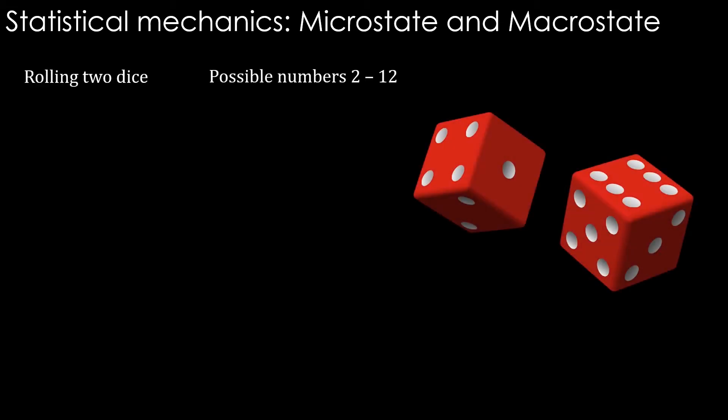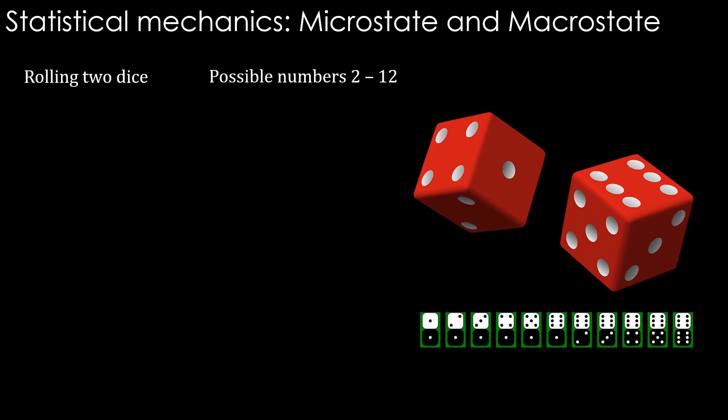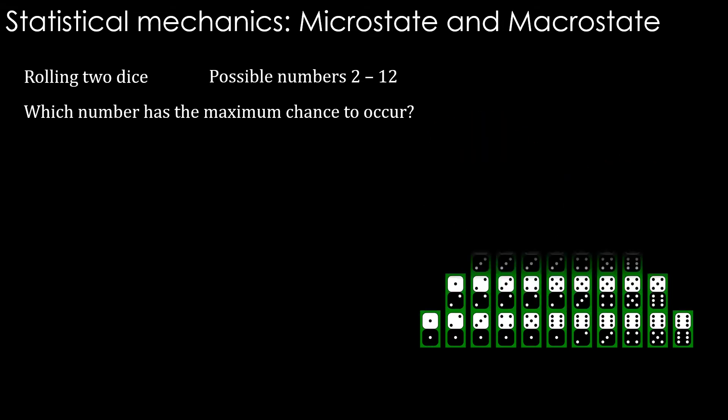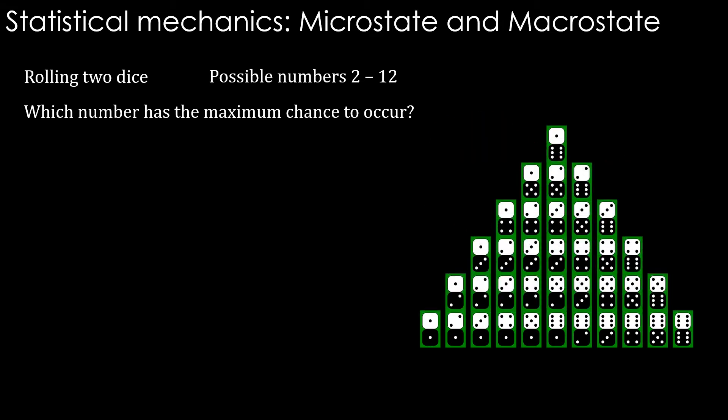Imagine rolling two dice. Possible numbers are 2 to 12. Now can we ask this question: which number has the maximum chance to occur? Yes, because this is how the outcomes will be. Each number has a certain number of ways of occurring.